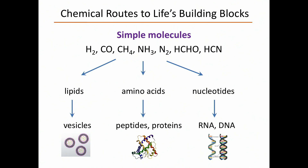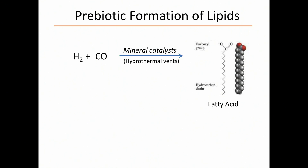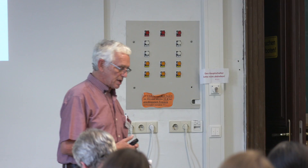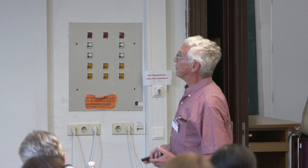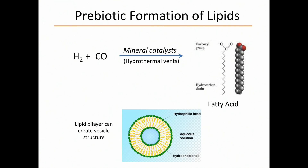Lipids: it turns out there's a chemical process — the Fischer-Tropsch synthesis — whereby hydrogen and carbon monoxide, under the right conditions with mineral catalysts, can be catalyzed to form hydrocarbons, and amongst them fatty acids with a hydrophilic head and a hydrophobic tail. And of course, once you have that kind of molecule, you can form vesicles through the formation of bilayers.